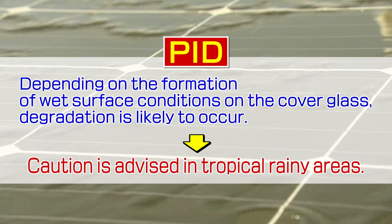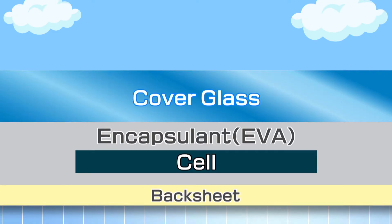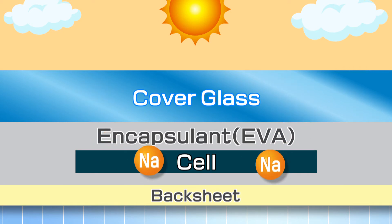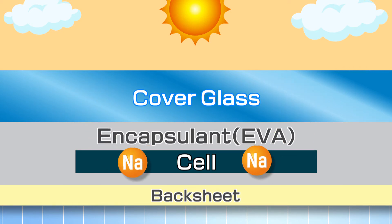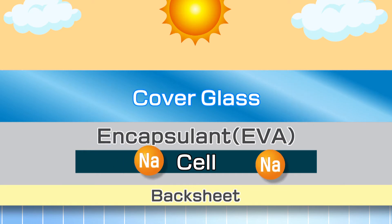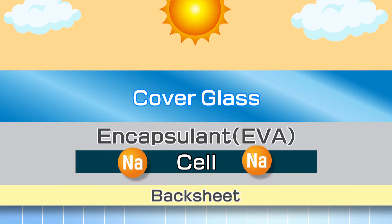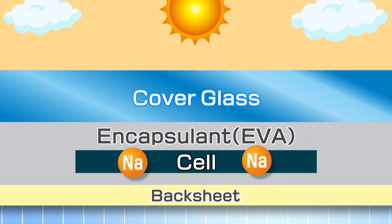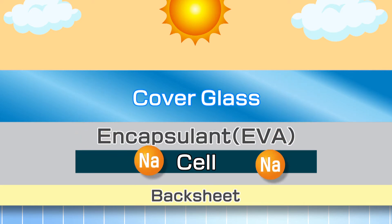In that regard, particular attention is necessary, especially in coastal and tropical regions. In addition, the effect of PID is stronger at high temperatures due to sodium migration from the glass plate to inside the solar cells. Therefore, as the influence of global warming becomes more serious, the occurrence of PID will likely intensify in Japan because of increasing humidity and temperature.